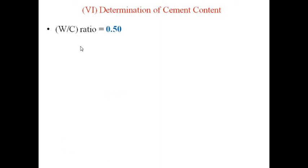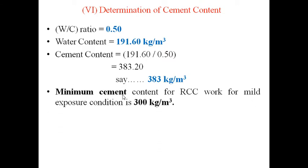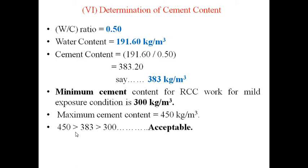Determination of cement content: cement content = water content ÷ water-cement ratio = 191.6 ÷ 0.5 ≈ 383 kg/m³. The minimum cement content for RCC work in mild exposure is 300 kg/m³ and the maximum cement content for ordinary Portland cement is 450 kg/m³. Our value of 383 kg/m³ is between these limits, so it is acceptable.